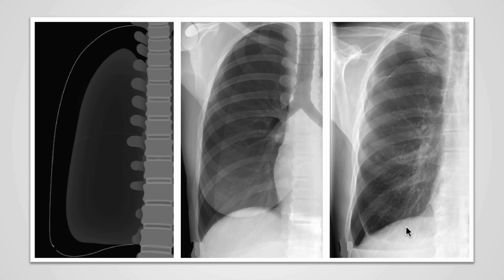The pleural space is a potential space that can accumulate fluid and air. When air enters into the pleural space, it will rise to the most superior part of the thorax. If further air accumulates, then the air will accumulate lateral and even inferior to the lung. In order to identify a pneumothorax, we need to identify the black air within the pleural space and differentiate that from the air within the lungs.